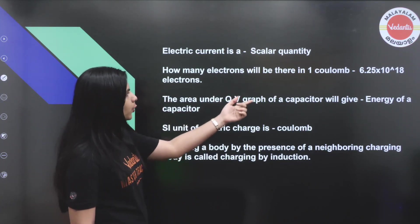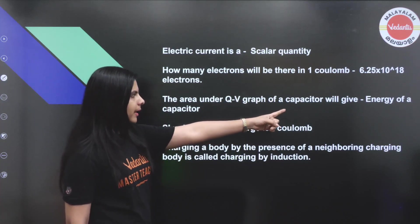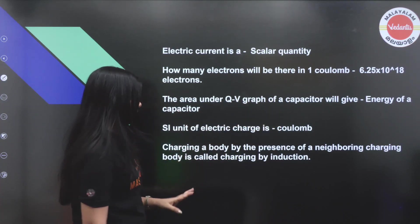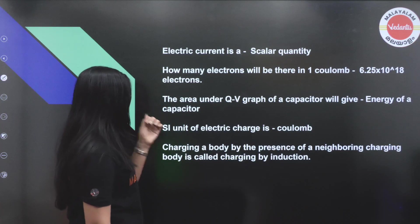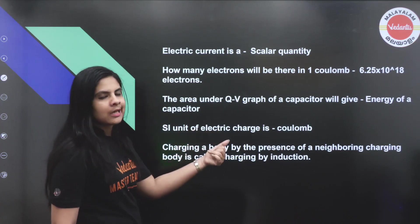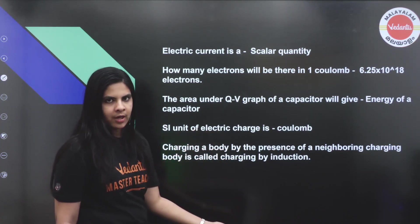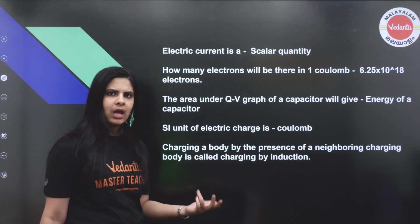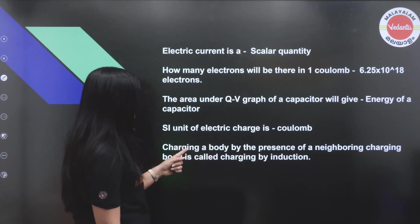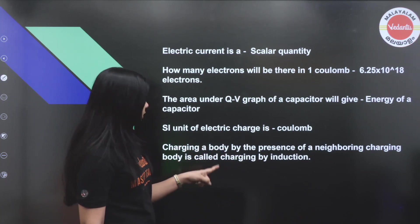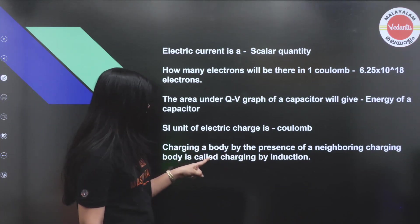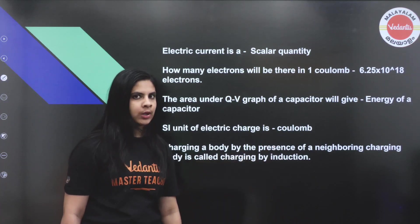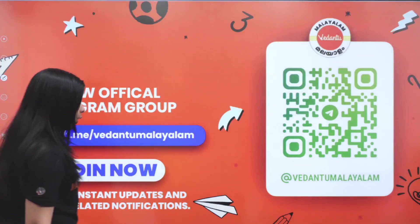The area under the QV graph of a capacitor gives the energy of the capacitor. The SI unit of electric charge is the coulomb, and the unit of current is the ampere. Charging a body by the presence of a neighboring charged body is called charging by induction.